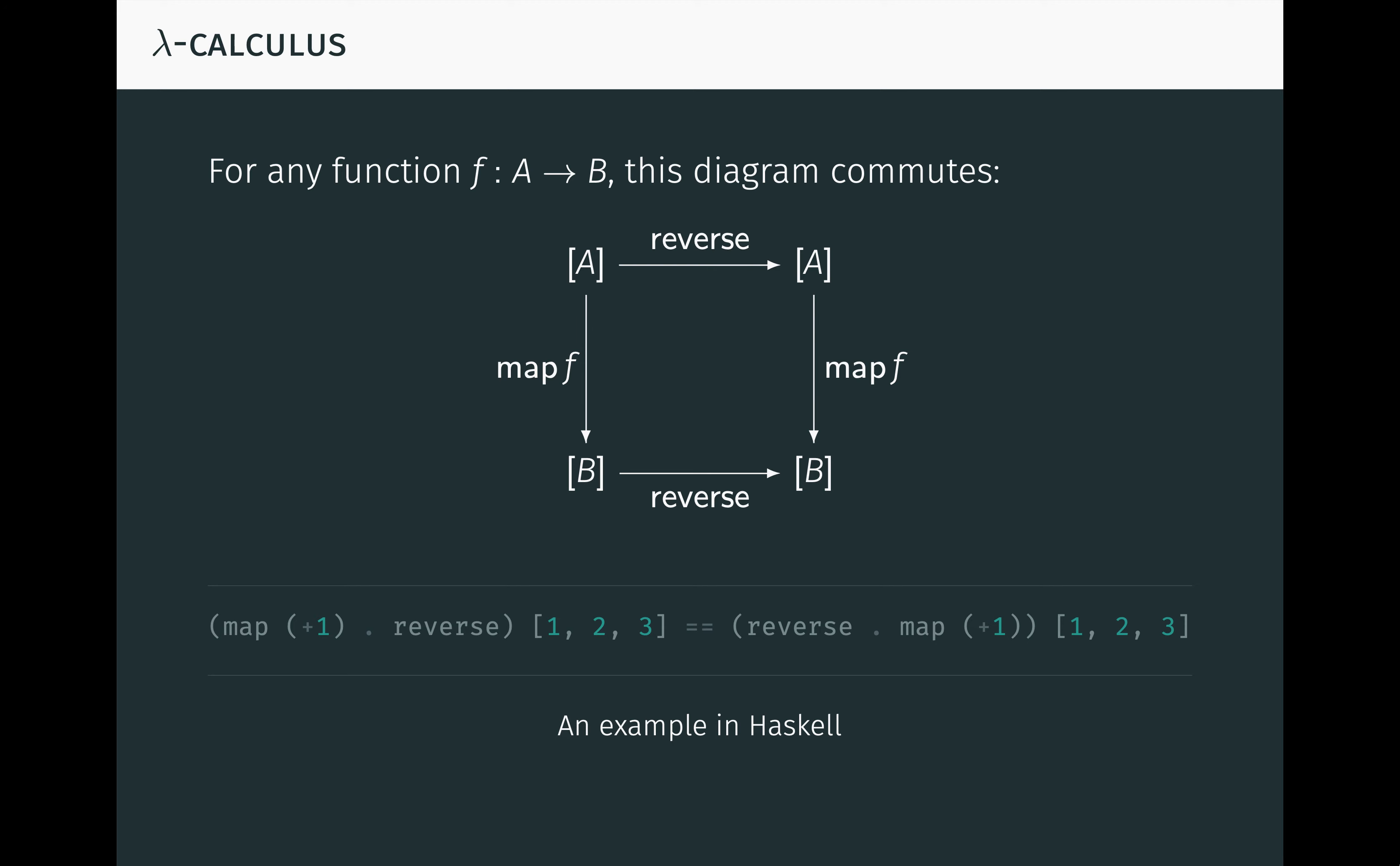Obviously, this is a simple example. The point is that any polymorphic function is a natural transformation, although usually involving more complicated functors. So natural transformations are ubiquitous in the lambda calculus and functional programming at large.